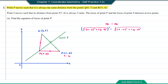Next, expand (x minus 8) squared to get x squared minus 16x plus 64. Expand (y minus 7) squared to get y squared minus 14y plus 49. This equals the expansion of (x minus 11) squared, giving x squared minus 22x plus 121, and (y minus 4) squared giving y squared minus 8y plus 16. On both sides we have the same x squared and y squared terms, so we can cancel them.